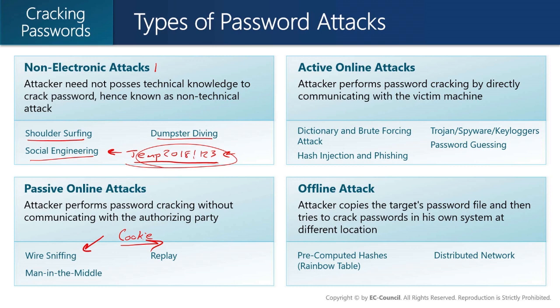Wire sniffing doesn't work that well these days because we use switches. So to get traffic to actually come to us and through us, we've got to manipulate the network. The process of doing that is called man-in-the-middle attacks. We can do things like ARP poisoning, route injection to protocols such as OSPF, gateway hijacking, or hijacking spanning tree protocol. There are lots of network protocols, and a lot of them don't use authentication of any kind. Even though protection mechanisms can be enabled, a lot of people don't bother to turn them on.